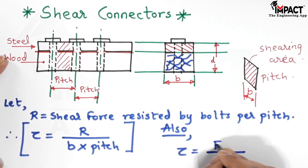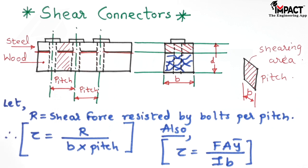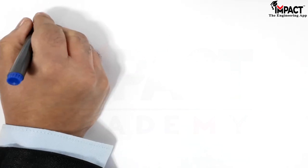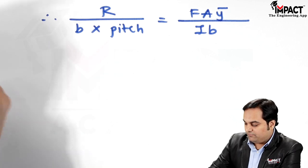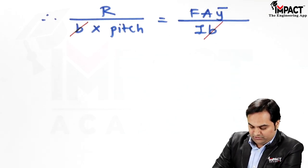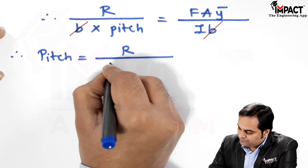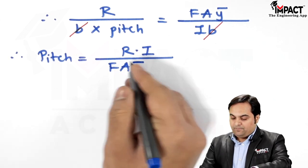This shear stress tau is also given by the formula FAȲ / IB, which comes from the standard shear stress derivation — you can refer to my video where I derived that equation. Substituting tau = R / (B × pitch) into this formula, B cancels from both sides and rearranging gives us Equation 1: R = F·A·Ȳ·I ... wait, rearranging correctly: R = (F·A·Ȳ / I) × pitch, or pitch = R·I / (F·A·Ȳ).